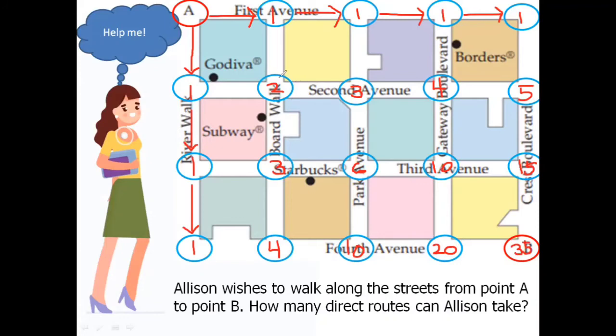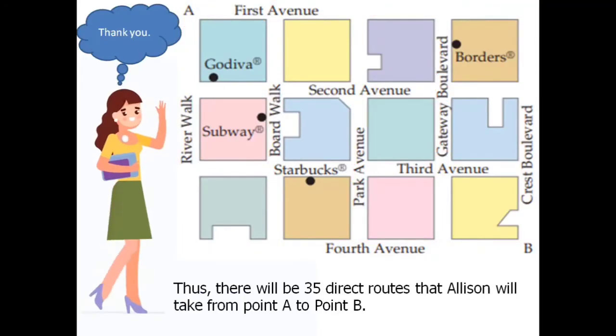So for each intersection, all you need to do is just add the two routes on the adjacent sides. Thus, there will be thirty-five direct routes that Allison will take from point A to point B.